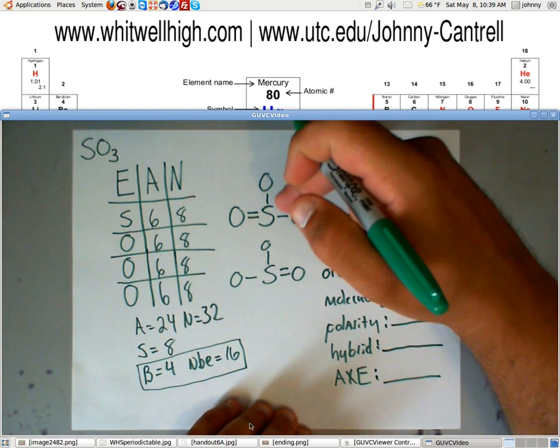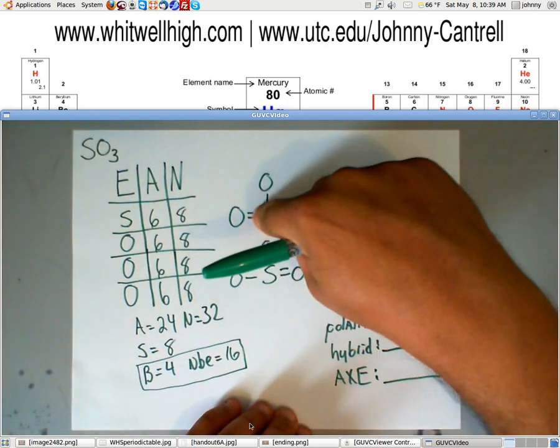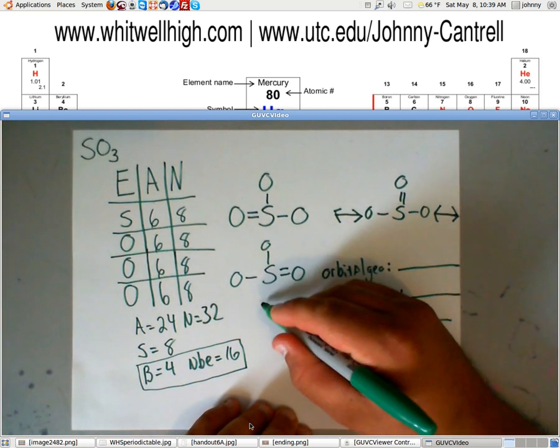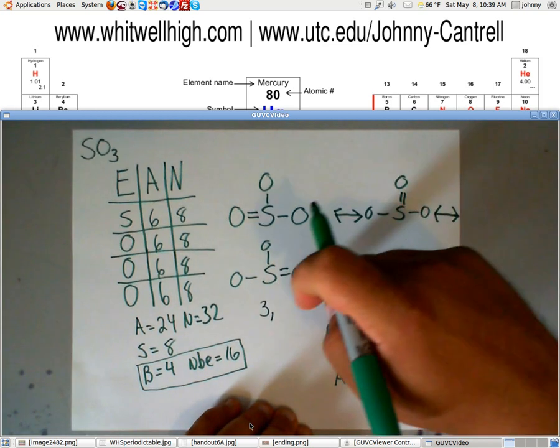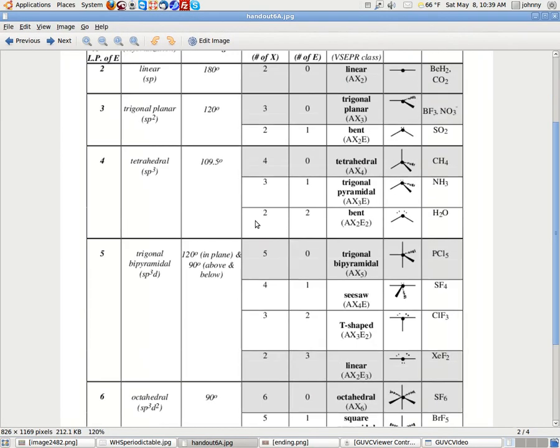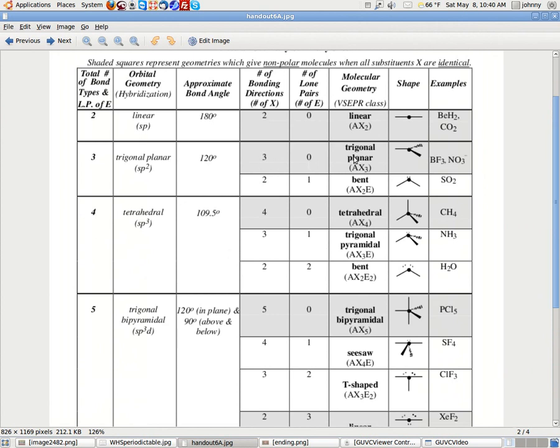Anyway, notice that you've got three bonds. Yes, I just counted the double bond one time. One, two, three. So, the molecular number that we're looking for is three, comma. Notice that you don't have any lone pairs on any of the S's. So, we're looking for three, zero. On handout 6A, three, zero is right here. Three, zero tells you that the orbital geometry is trigonal planar. The molecular geometry is trigonal planar.